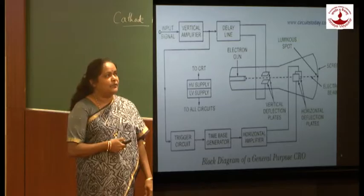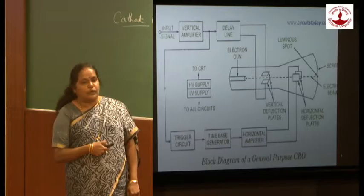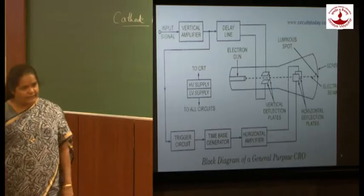The vertical amplifier is connected to the next system called the delay line. The delay line produces two output waveforms which are out of phase, and these are connected to the vertical deflecting plates.